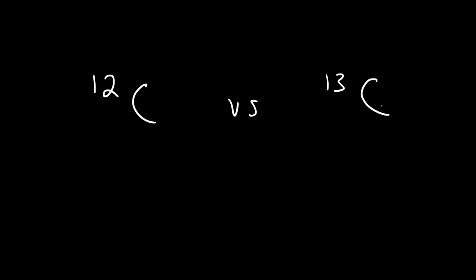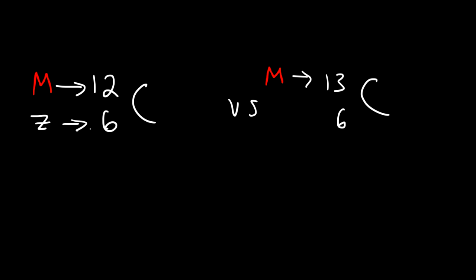So chemically speaking they react the same way. Now the number that you see here is the mass number. Carbon-12 has an atomic number of 6, and the same is true for carbon-13. The atomic number of an element identifies the element, so carbon will always have an atomic number of 6. Z represents the atomic number. When you look at a periodic table you're going to see two numbers — the smaller is the atomic number and the larger is the mass number.